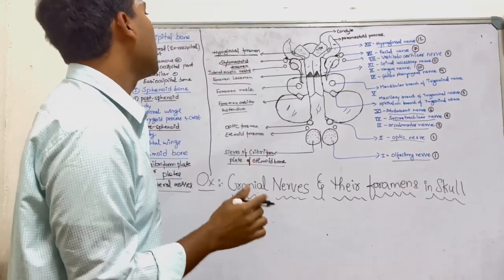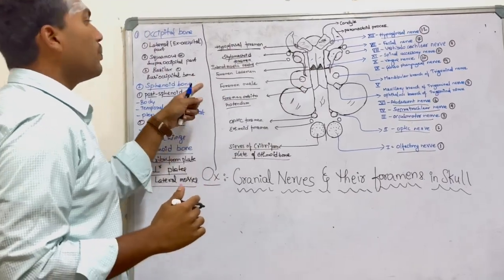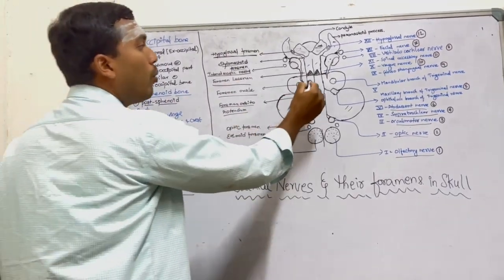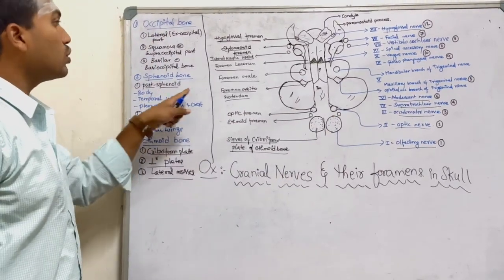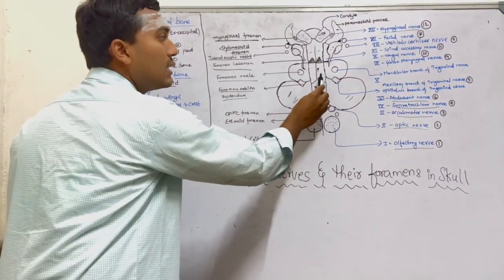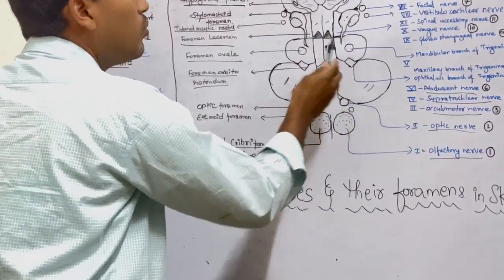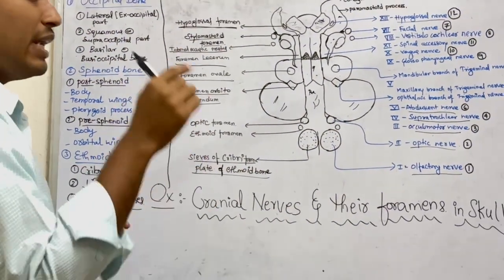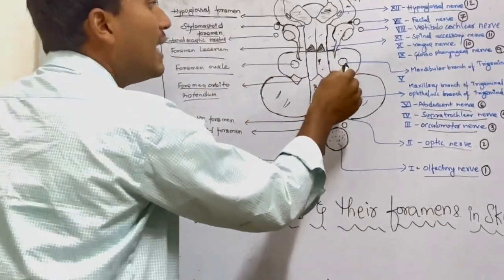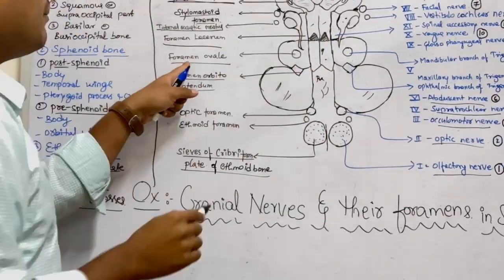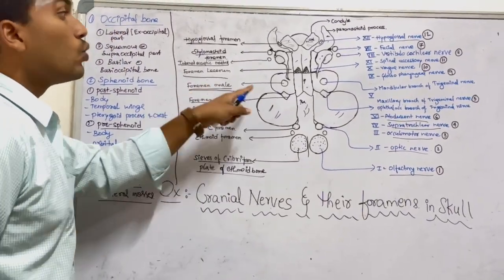Coming to the sphenoid bone — the sphenoid bone consists of post-sphenoid and pre-sphenoid. The post-sphenoid consists of a body, temporal wings, and ventrally has the pterygoid process and pterygoid crest. The temporal wing at its middle consists of a foramen called foramen ovale, through which the mandibular branch of the trigeminal nerve arises.